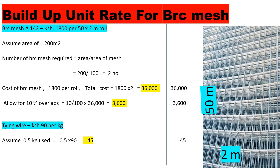The BRC mesh is A142 at a cost of 1,800 shillings and the roll is 50 by 2 meters. We are going to assume an area of 200 square meters. The number of BRC mesh rolls required equals the floor area divided by the area of the mesh. The area of one roll is 50 by 2 equals 100 square meters, so 200 divided by 100 gives us 2 rolls.